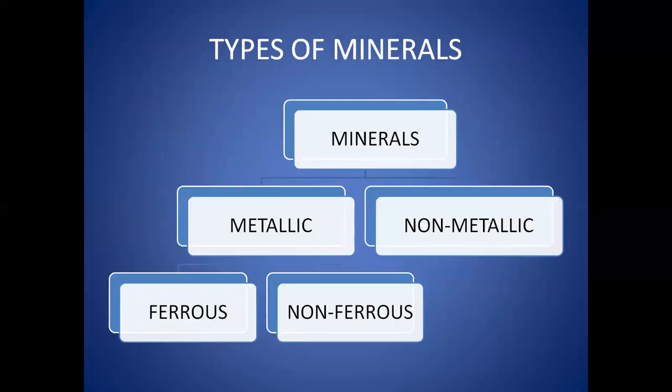Coming to the types of minerals. There are over 3,000 different minerals. On the basis of composition, minerals are classified mainly as metallic and non-metallic minerals. Metallic minerals contain metal in raw form. Metals are hard substances that conduct heat and electricity and have a characteristic luster or shine. Iron ore, bauxite, and manganese ore are some examples.